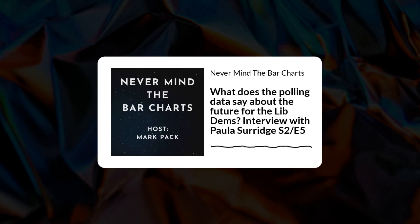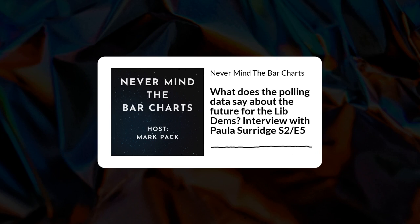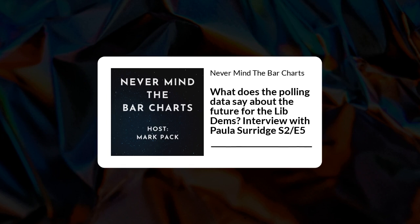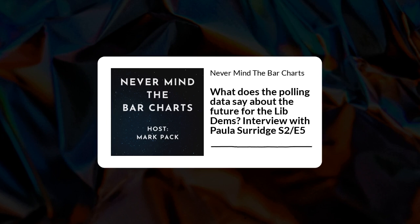Hello and welcome to the latest episode of Nevermind the Bar Charts with myself, Mark Pack. I'm really glad to welcome back Paula Surridge, who long-term listeners may remember from an interview in September of last year. Paula is an academic at Bristol University and an expert on how values impact people's voting choices. Since we last spoke, there has been a general election and a whole load of new data, and of course we're in the early stages of the coronavirus crisis in Britain.